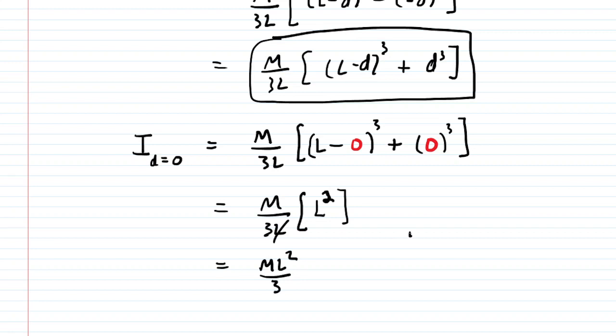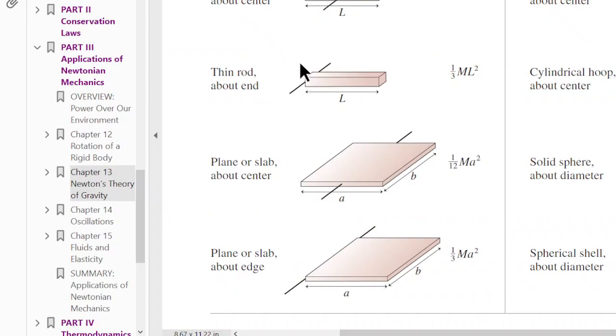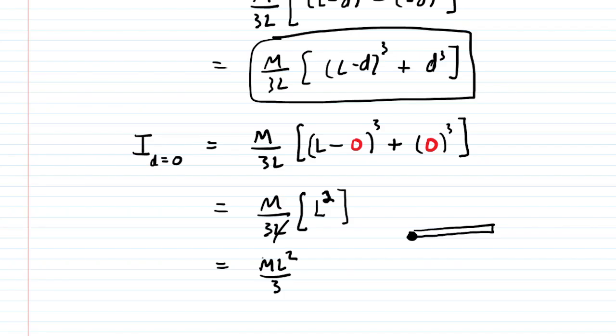Let's make sure that that does equal the moment of inertia for a thin rod where the axis of rotation is on the far left end. So here is that table. And right here we see that when our axis passes through the far left end of the rod, we end up with one third ml squared. And that's exactly what we have right here. We have one third ml squared. So that indeed checks out.